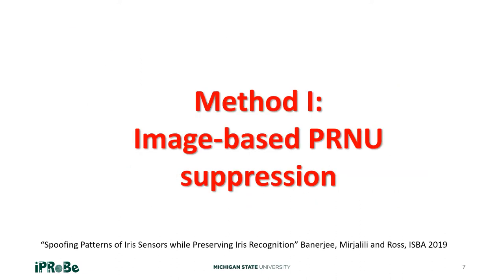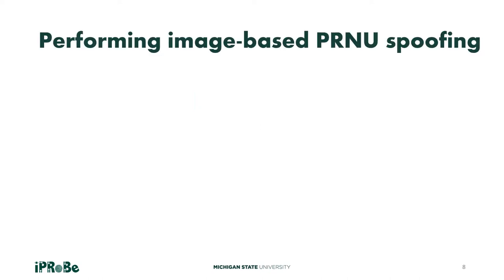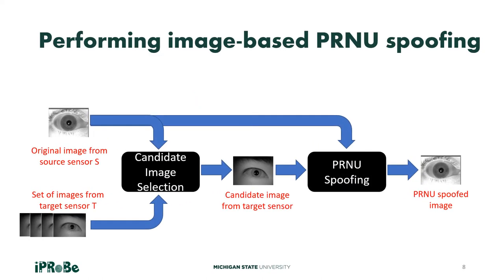The first method is known as image-based PRNU suppression. In this method, we take an image from the source sensor S and modify it patch by patch using a candidate image selected from a set of images belonging to a different target sensor T. We perform this iterative modification, and the output is known as the PRNU spoofed image, because the output will be misclassified as belonging to the target sensor T instead of the source sensor S.